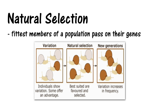Natural selection is when the fittest members of a population pass their genes on to the next generation, while the weaker members don't survive long enough to reproduce and therefore cannot pass their genes on to the next generation. So the generation that follows is the product of the fittest members of the previous generation. This can happen because in every population there's variation.